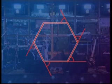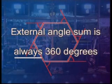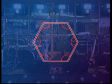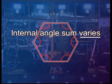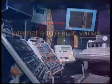Both regular and irregular polygons have two key properties. The sum of the external angles always equals 360 degrees, and the internal angle sum varies depending on the number of sides.